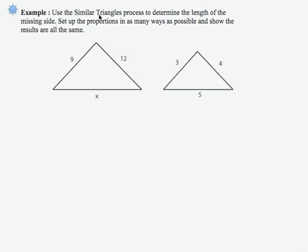In this example, we're asked to use similar triangles to determine the length of the missing side. The missing side is x. Set up the proportions in as many ways as possible and show the results are all the same.